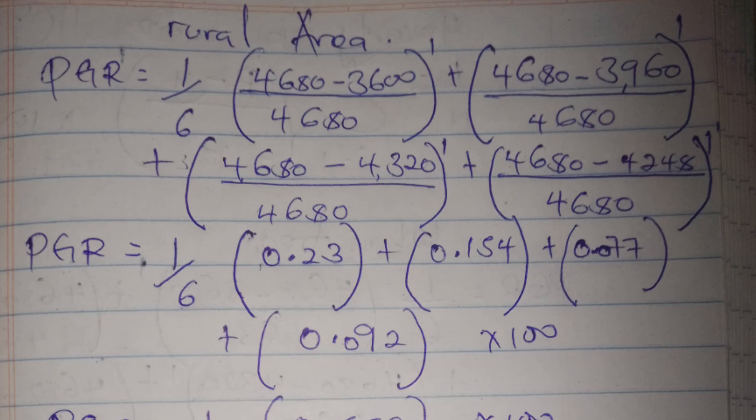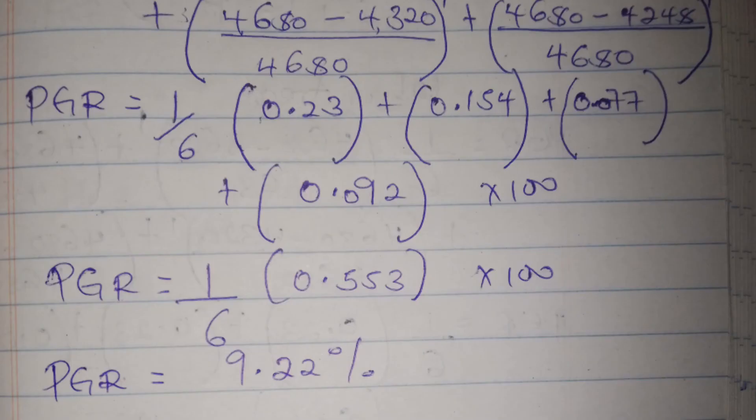Then we do the same thing for the rural area. We substitute in our formula and we only use the figures for individuals that are earning below the poverty line. Don't forget the power 1. After everything, you multiply with 100, and the poverty gap ratio for the rural area is 9.22 percent.